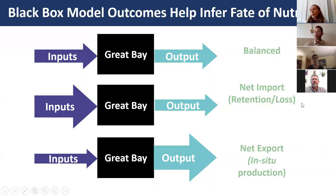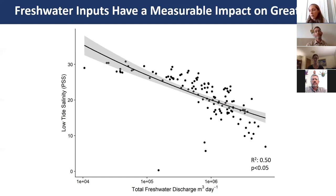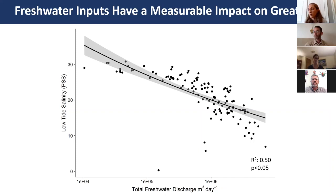To apply the box model to an estuarine system, we first determine whether we can detect the influence of rivers on estuarine water chemistry by assessing the relationship between freshwater inputs and salinity. A scatter plot with total freshwater inputs per day on the x-axis and low tide salinity on the y-axis shows that as freshwater input increases, low tide salinity decreases, indicating that freshwater is mixing into Great Bay.